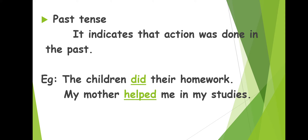Past tense indicates that the action was done in the past — that means the action has happened before. It can be one minute before, five minutes before, one hour before, one month before, one year before, or ten years before. So if the action has happened just before, then that becomes the past tense. Look at the examples given — we are using the same sentences so that you can understand.